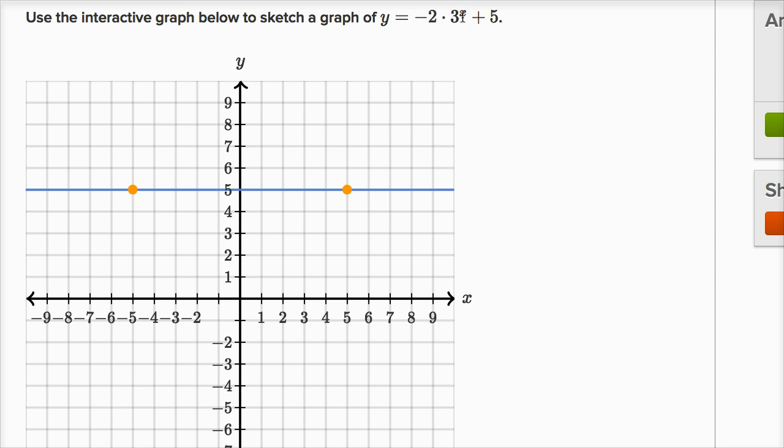And then as x gets larger and larger, three to the x is growing exponentially. But we're multiplying it times negative two, so it's going to become more and more negative, and then we add a five.